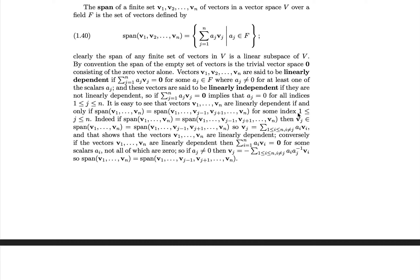The span of a finite set v1 to vn of vectors in a vector space V over field F is the set of all possible linear combinations of those vectors, where the coefficients on the sums are given by elements of the field. That is, choose any a_j in F, choose a set of n of them, and put them as coefficients on each of your v vectors.